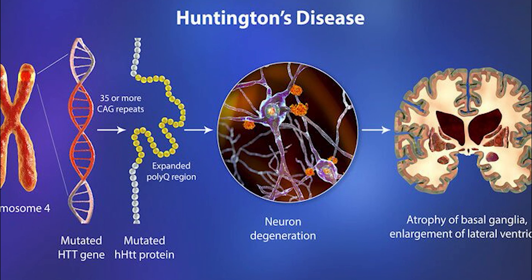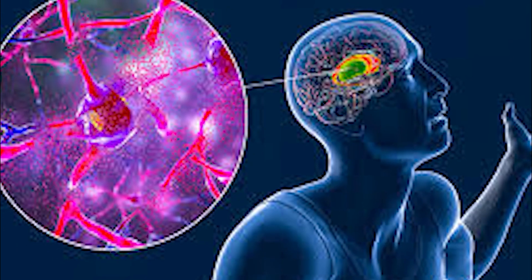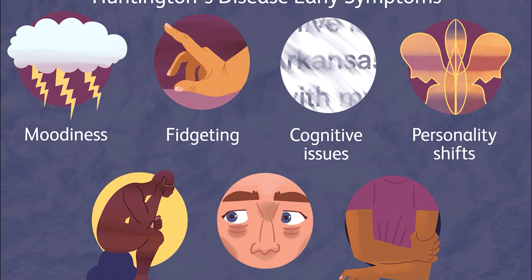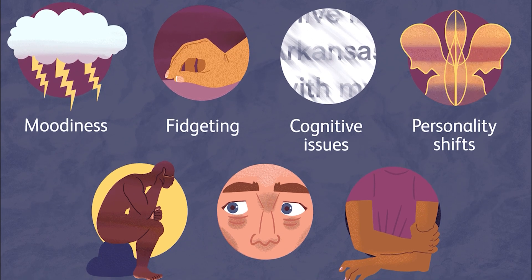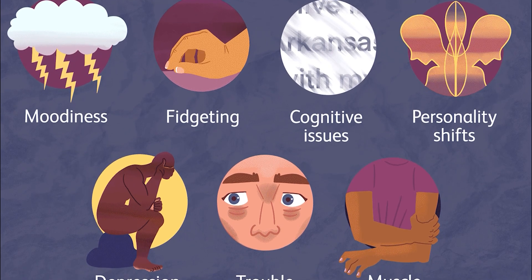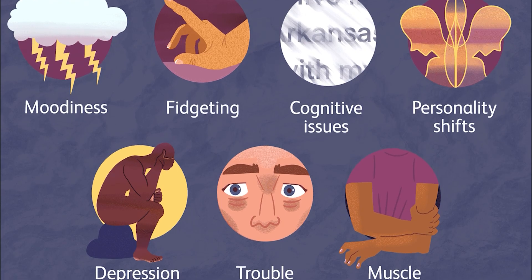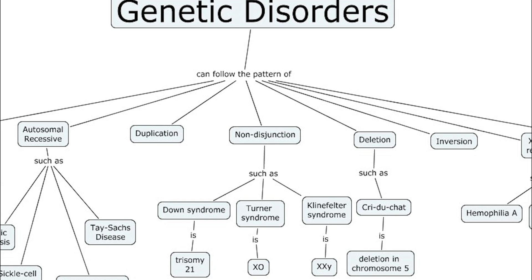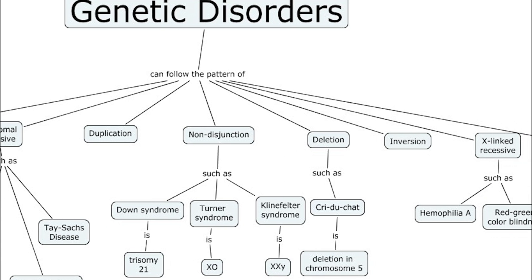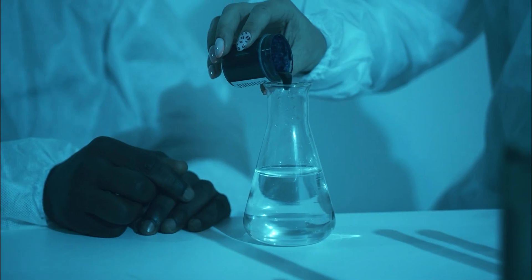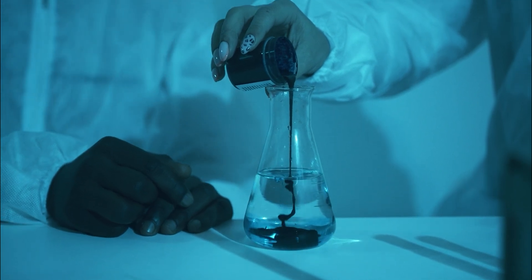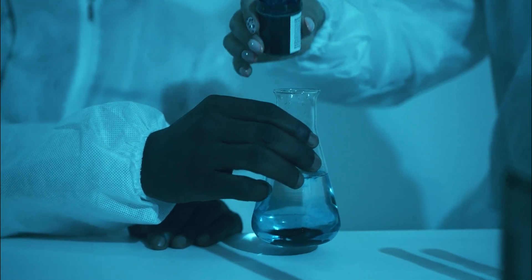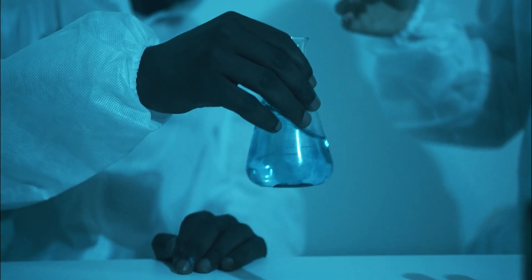Huntington's disease is a genetic disorder that affects the brain and nervous system. It is caused by a mutation in the HTT gene and results in the progressive loss of muscle control, as well as cognitive and behavioral problems. While there is currently no cure for most genetic disorders, advancements in genetic research are helping to improve diagnoses and treatment options for affected individuals.